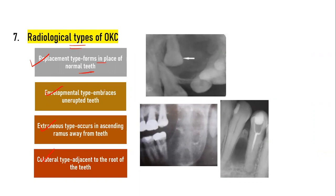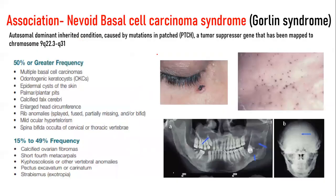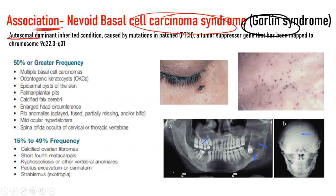The OKC is strongly associated with the nevoid basal cell carcinoma syndrome, also called the Gorlin-Goltz syndrome. The Gorlin-Goltz syndrome is an autosomal dominant inherited condition caused by mutations in the PTCH tumor suppressor gene. With this syndrome, there are multiple odontogenic keratocysts — as shown in this diagram, one in the ramus and one in the right maxilla.